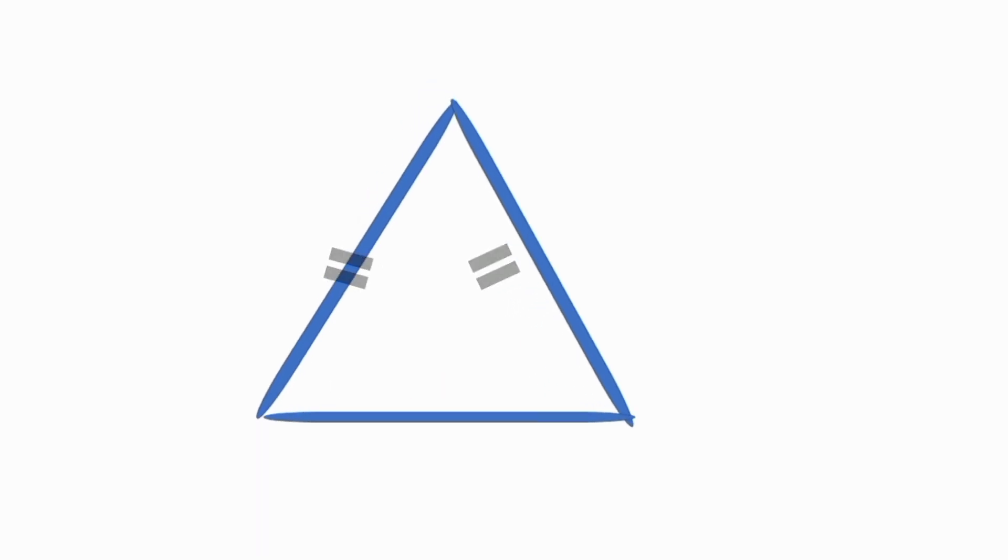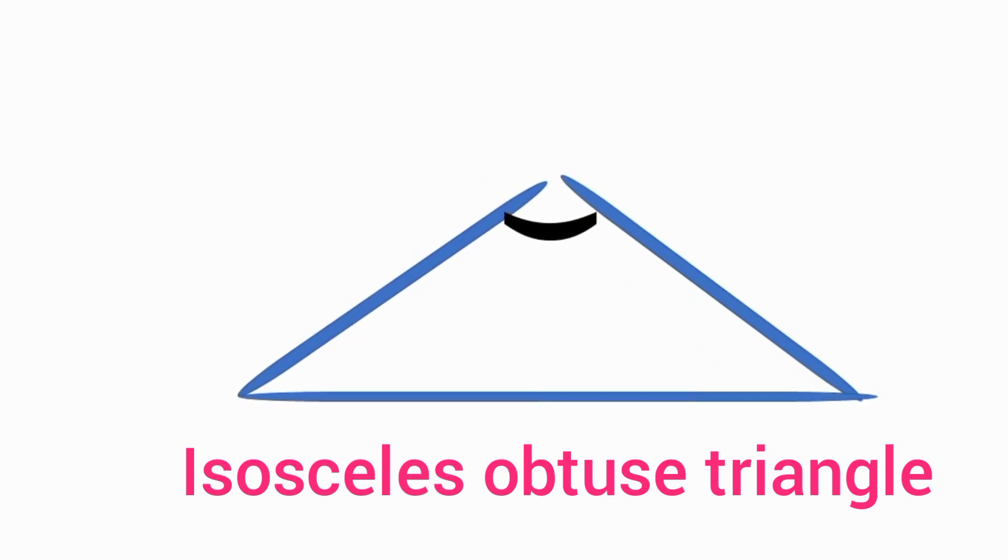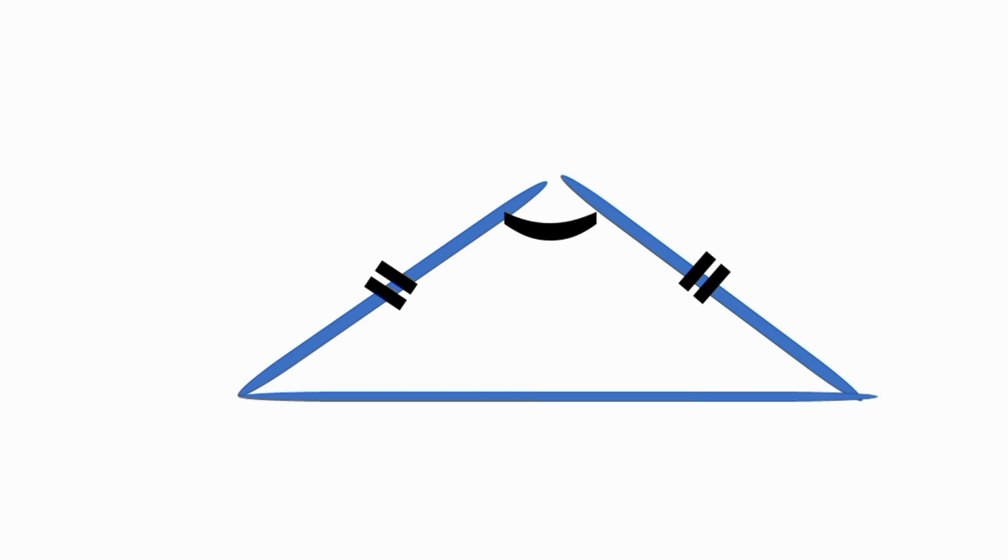Next is isosceles obtuse triangle. An isosceles obtuse triangle is a triangle in which one of the three angles is obtuse, lies between 90 degrees and 180 degrees, and the other two acute angles are equal in measurement.